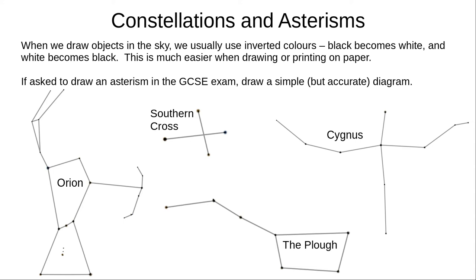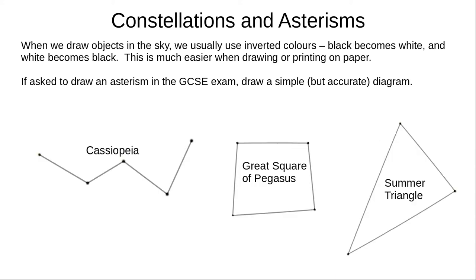When we draw asterisms, it's much easier to draw and print using inverted colours. The black of the sky becomes the white of the paper, and the bright stars become dark pencil or ink. If you're asked to draw an asterism in the GCSE exam, draw a simple but accurate diagram. Practice drawing these seven asterisms until you can sketch them from memory. There is a summary screen with all seven at the end of the video and on the linked Google presentation.